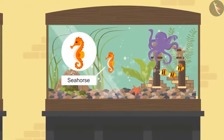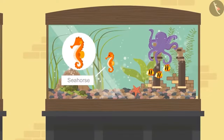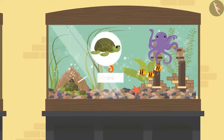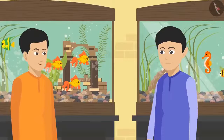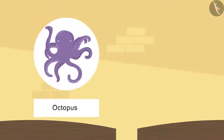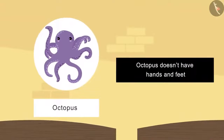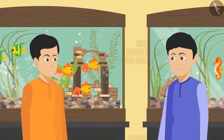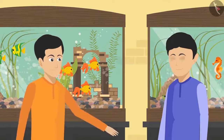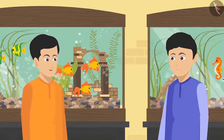Among the other aquarium animals, they spotted a seahorse — probably the slowest swimmer in the world — along with turtles, starfish, and octopuses. Zeeshan found the octopus most amazing: it has no hands or feet but eight tentacles, which are very flexible like tongues and help it swim. The tentacles also have many impressive features.